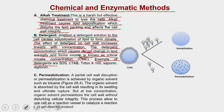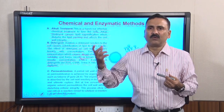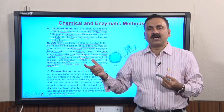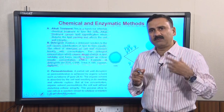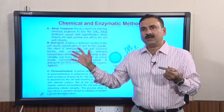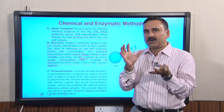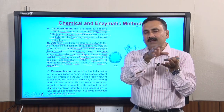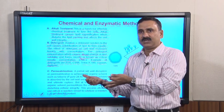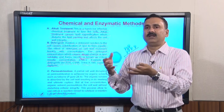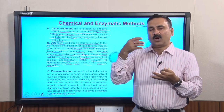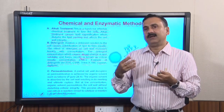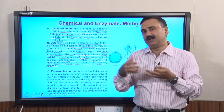Examples of detergents used for cell disruption include SDS (sodium dodecyl sulfate), CTAB, Triton X-100, saponin, and digitonin. Detergents have a hydrophobic core and a polar chain; the hydrophobic core binds to the hydrophobic lipids, dissolving them into the detergent. Once the lipids are dissolved, that part of the plasma membrane is washed away, the cell is no longer intact, and lysis occurs.